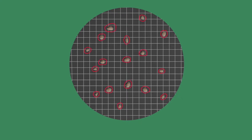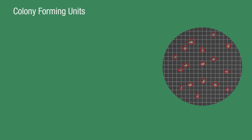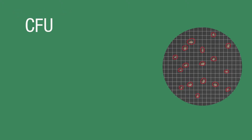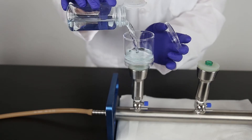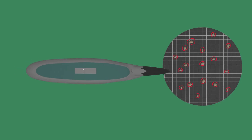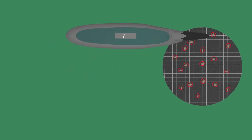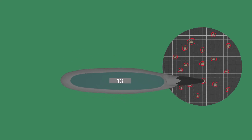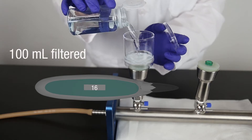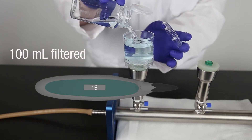After counting all colonies, results need to be properly reported. Membrane filtration results are typically reported as colony forming units per 100 milliliters of sample tested. This is easy if 100 milliliters was originally filtered. For example, if there were 16 colonies on a total count membrane after incubation and 100 milliliters of sample was filtered, this is reported as 16 CFU per 100 milliliters.